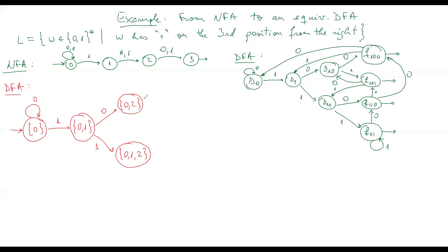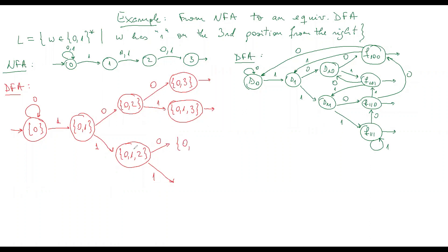From state {0,1,2} with '0': state 0 stays at 0, state 1 goes to 2, and state 2 goes to 3, giving us {0,3}. That is a final state because 3 is included. With '1': state 0 goes to {0,1}, state 2 goes to 2, and state 2 goes to 3, giving us {0,1,2,3} — also a final state because 3 is included.